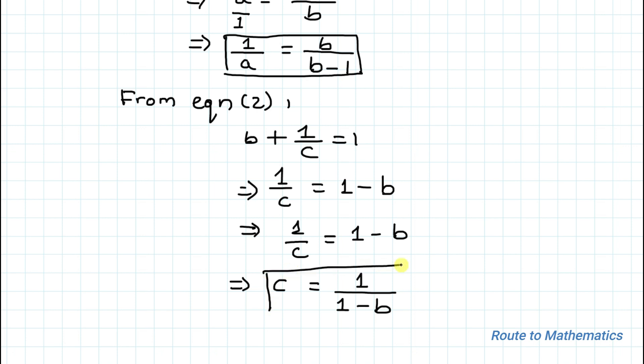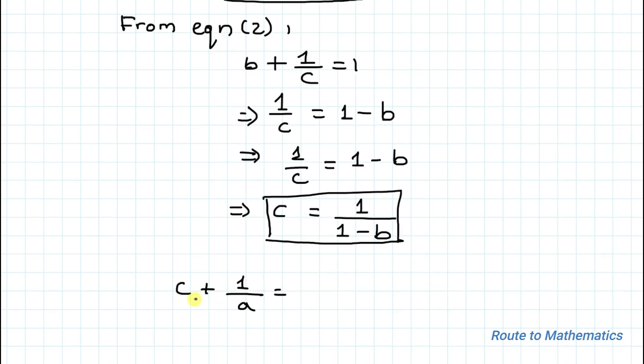Okay, so what are we asked to find out? c + 1/a. The value of c we found from equation 2 is 1/(1 - b), plus the value of 1/a is b/(b - 1).